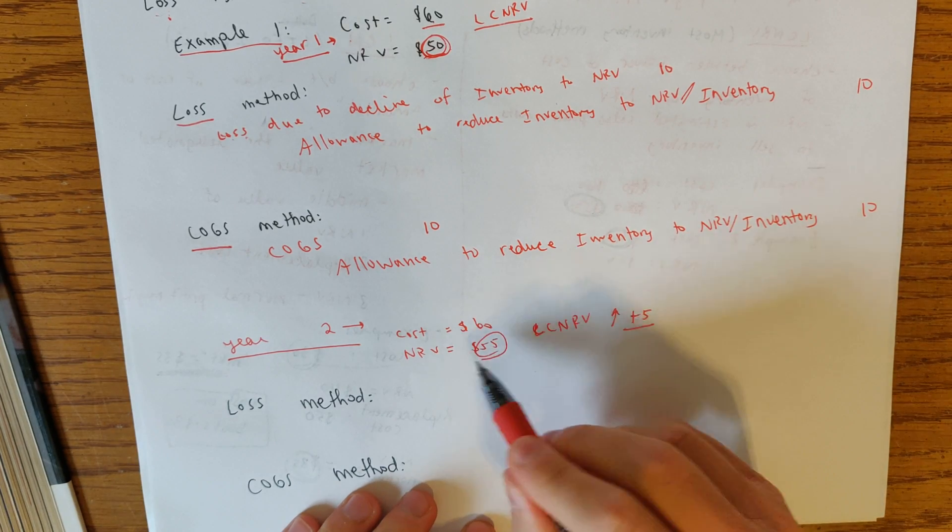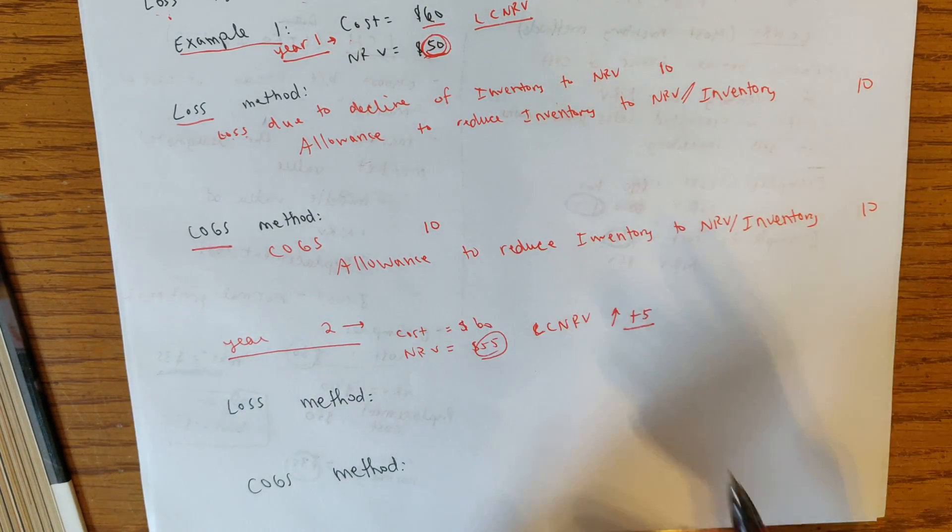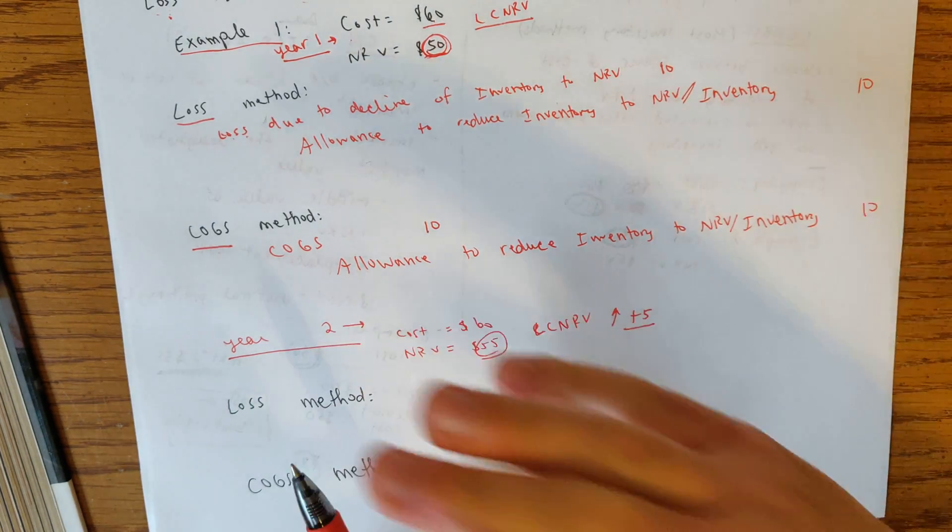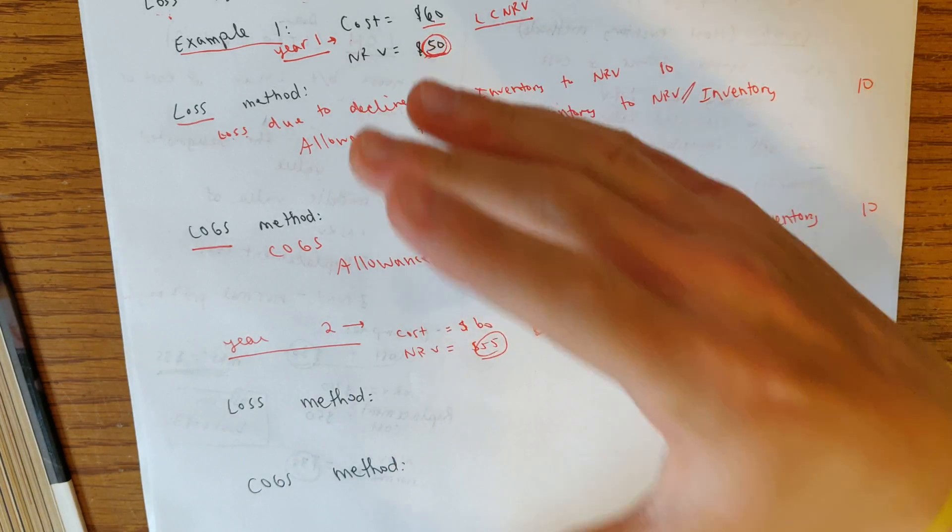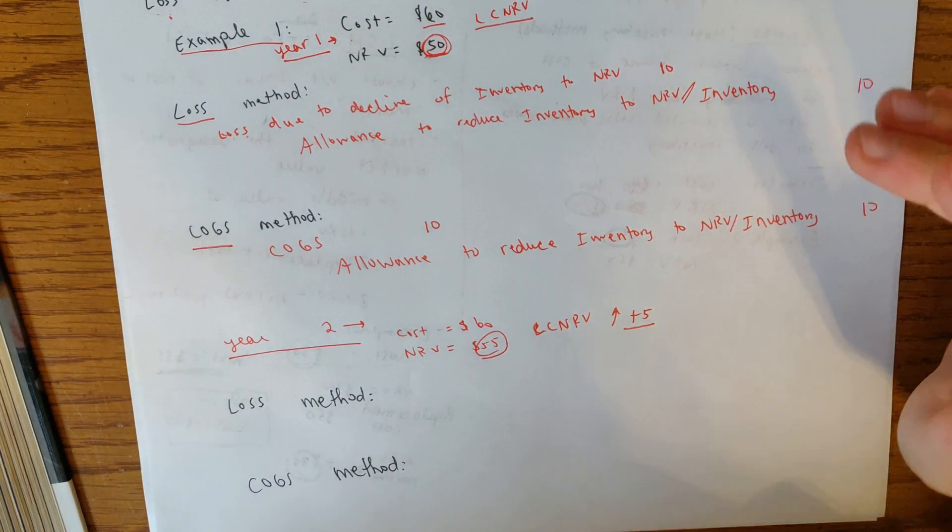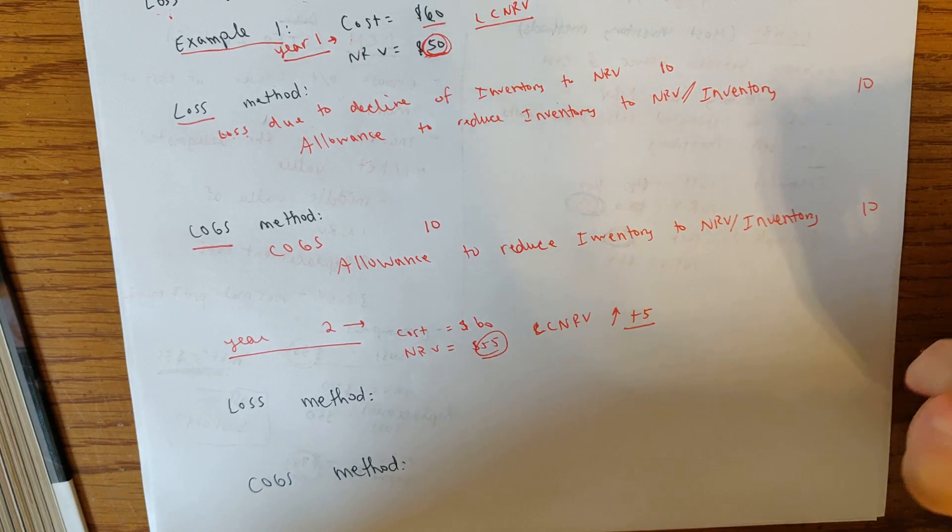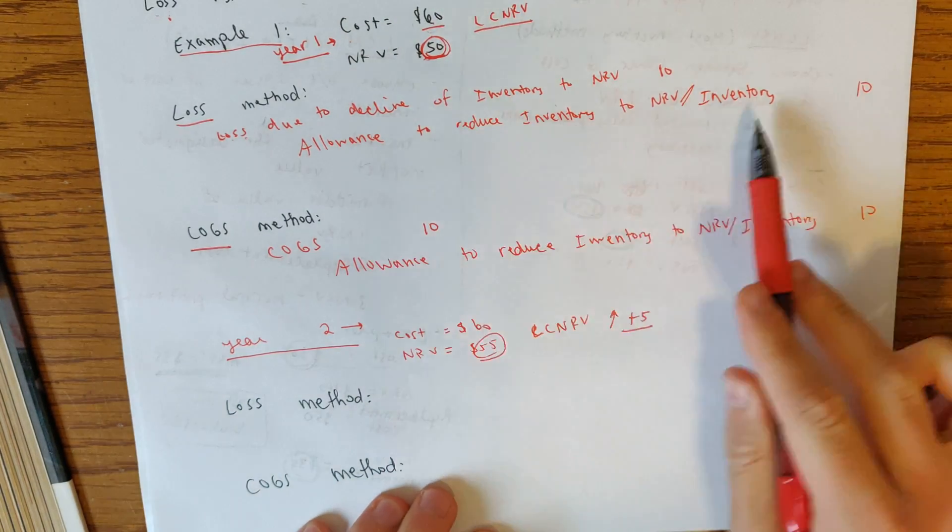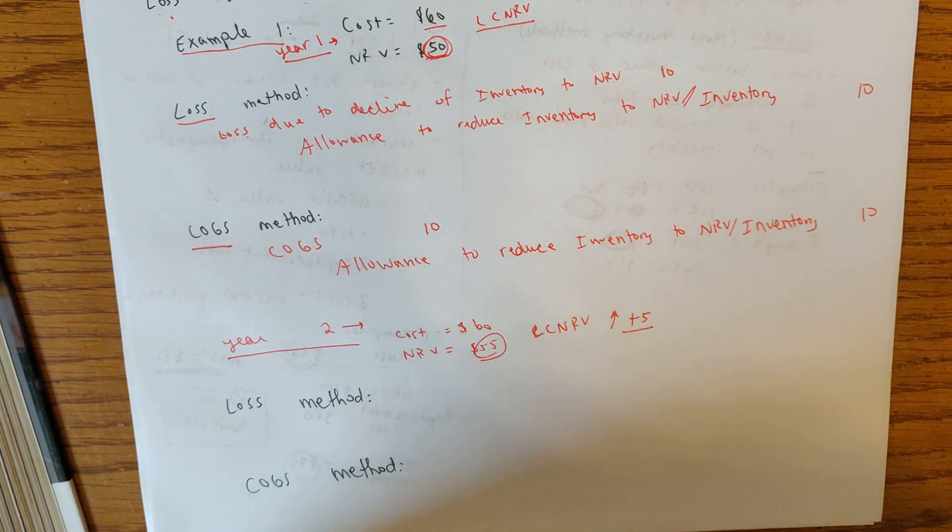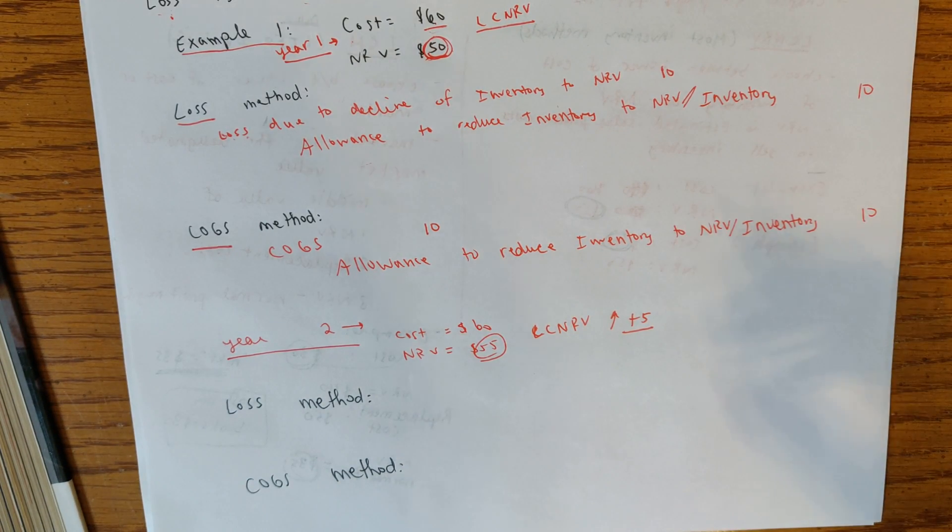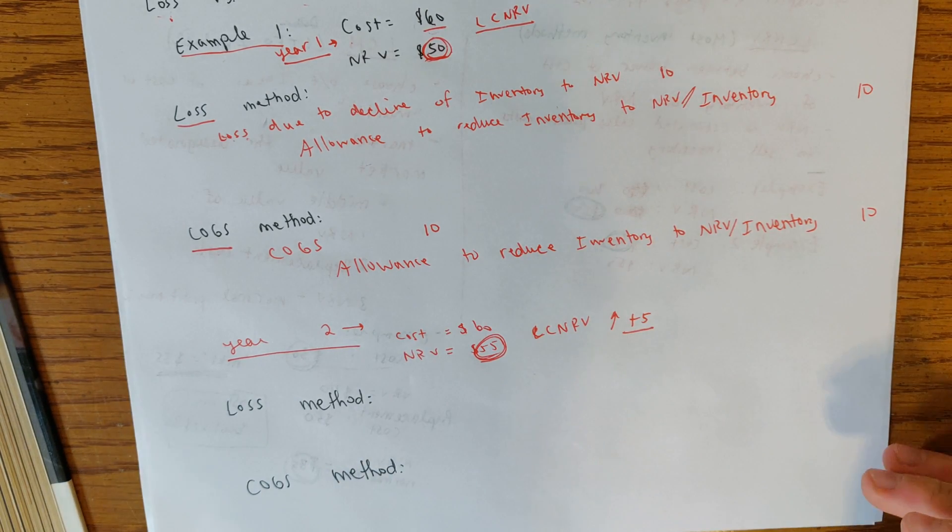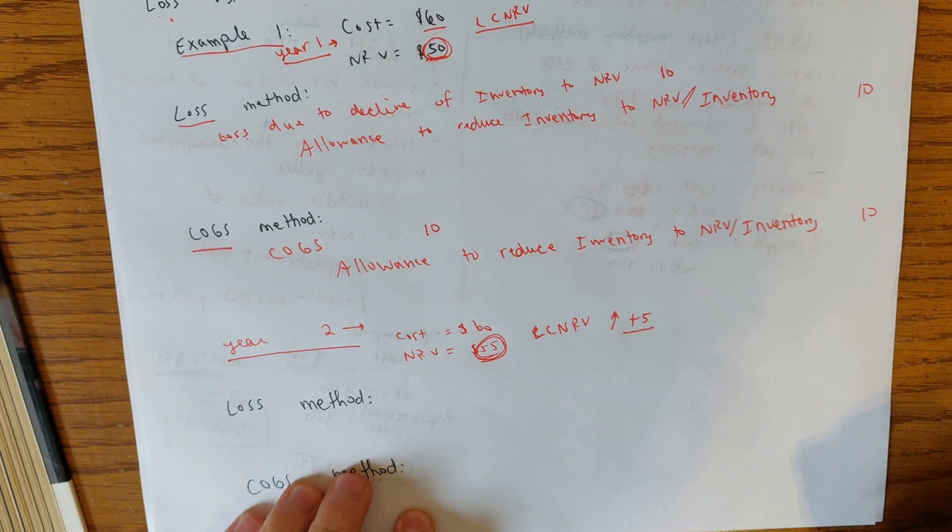However, it is still the lower one. So we still want to state the inventory on the books at $55. Now, if we think back to what we did last year, the inventory, assuming we still haven't sold this inventory, which in this problem we have not, the inventory would be sitting on the books at 50. And the reason we know that is because it was initially 60 and then we wrote it down. That's what the credit does here in either of these journal entries. It will write down the inventory, the net realizable value of the inventory to $50. But now we want it to be 55. So now we're actually going to have to do what's called a recovery of a loss.